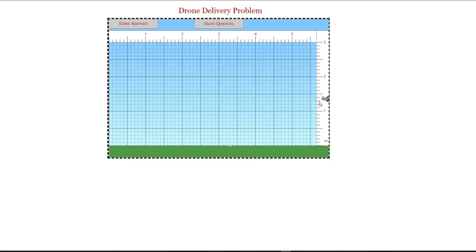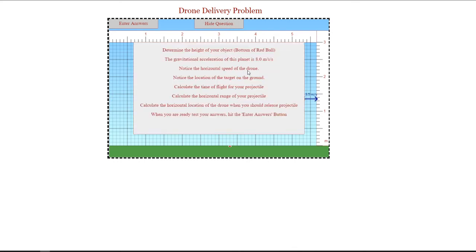For this problem, we're going to follow this little line here and it looks like it's at about 1.3 meters. So that's the height of the ball. The initial velocity of the ball is in the x-direction and that's 3.5 meters per second, and the gravitational acceleration of the planet is 8.0 meters per second squared.